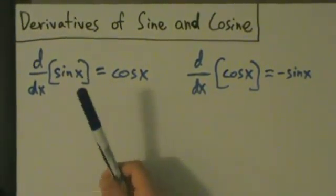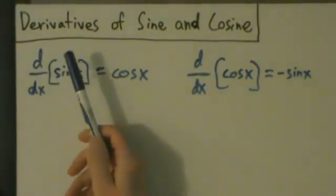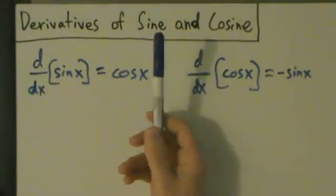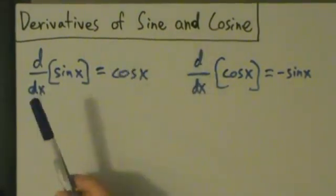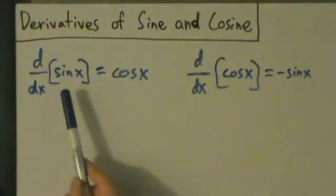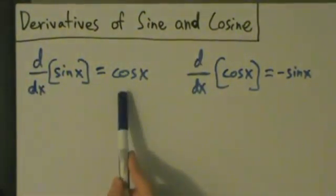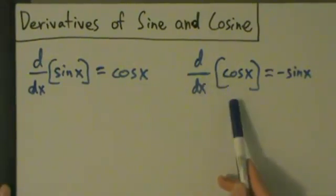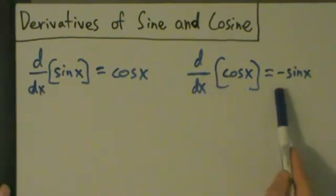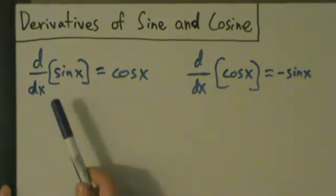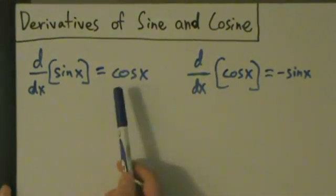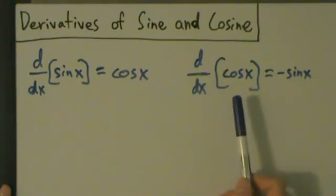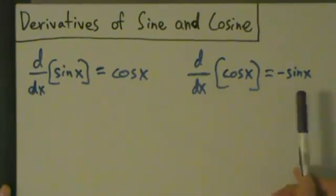All right, so now let's go ahead and talk about the derivatives of the sine and cosine functions. So here, d/dx of sine of x equals cosine x, and d/dx of cosine x equals negative sine of x. In other words, the derivative of sine is cosine, and the derivative of cosine is negative sine.